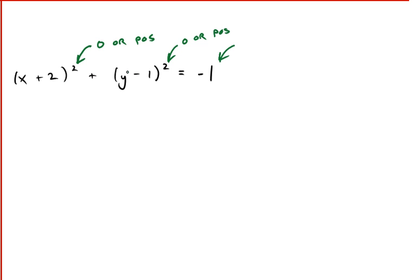You can't add two things that are 0 or positive and get a negative number. No way, Jose. So that's an empty locus. It describes no points.